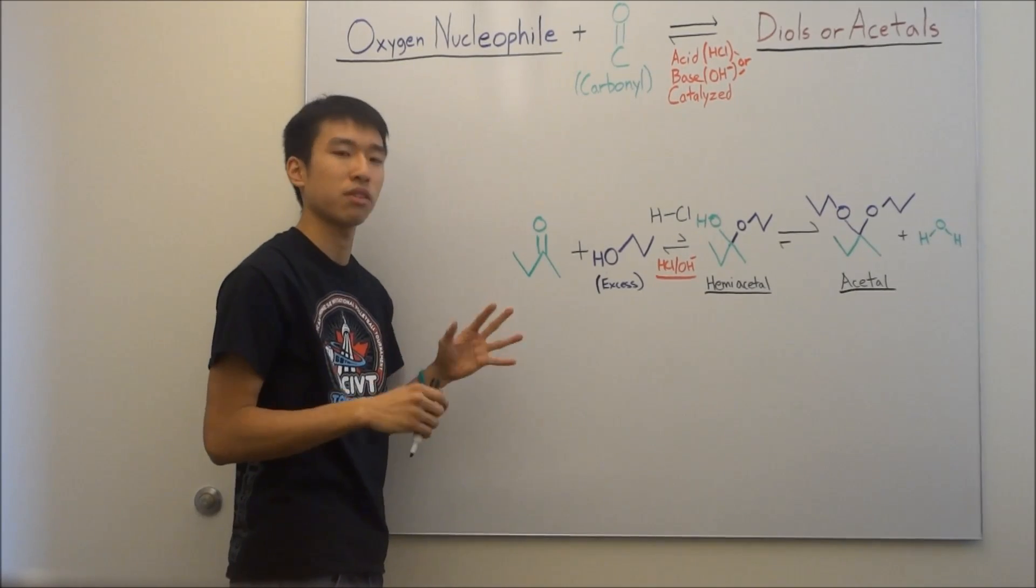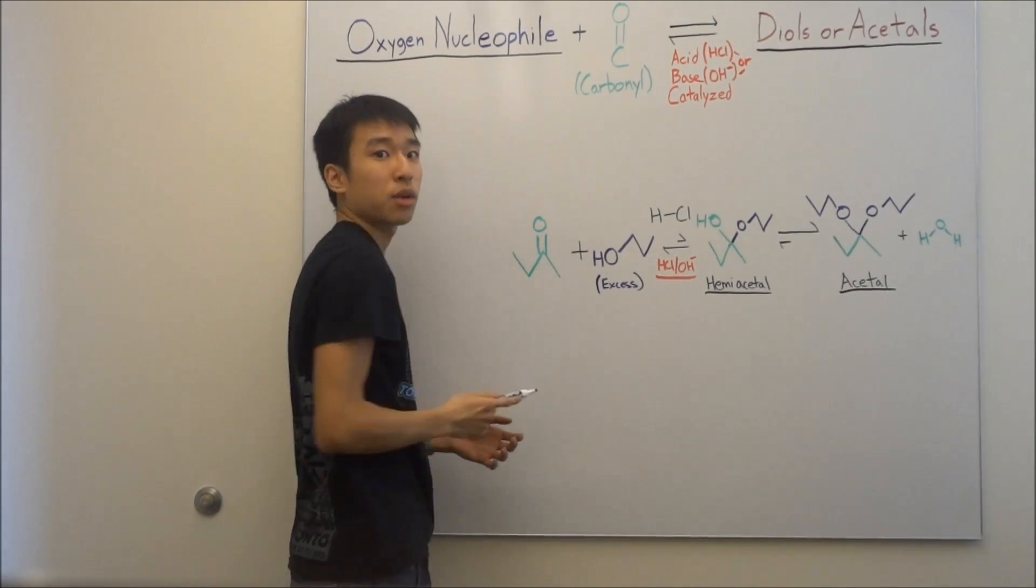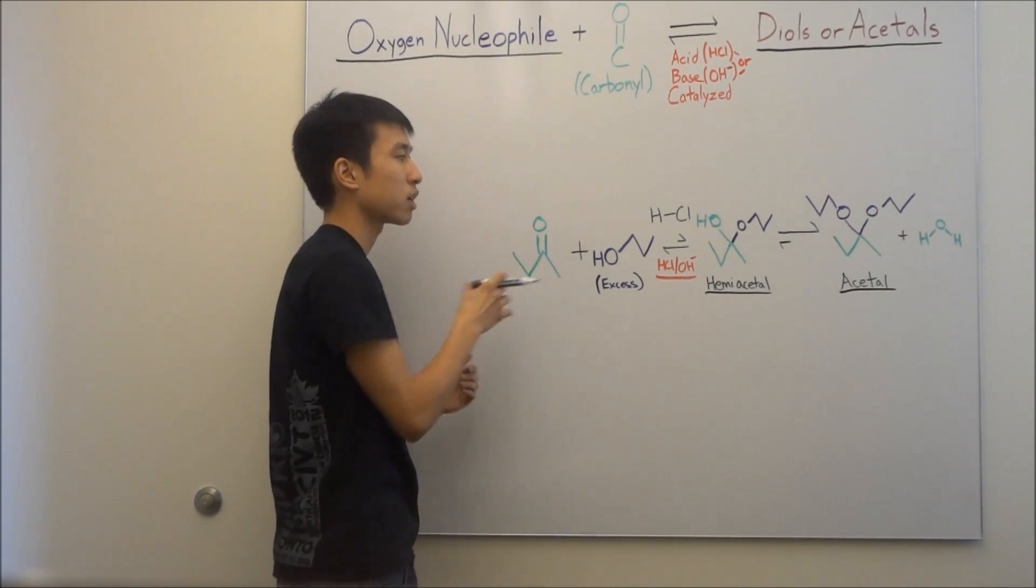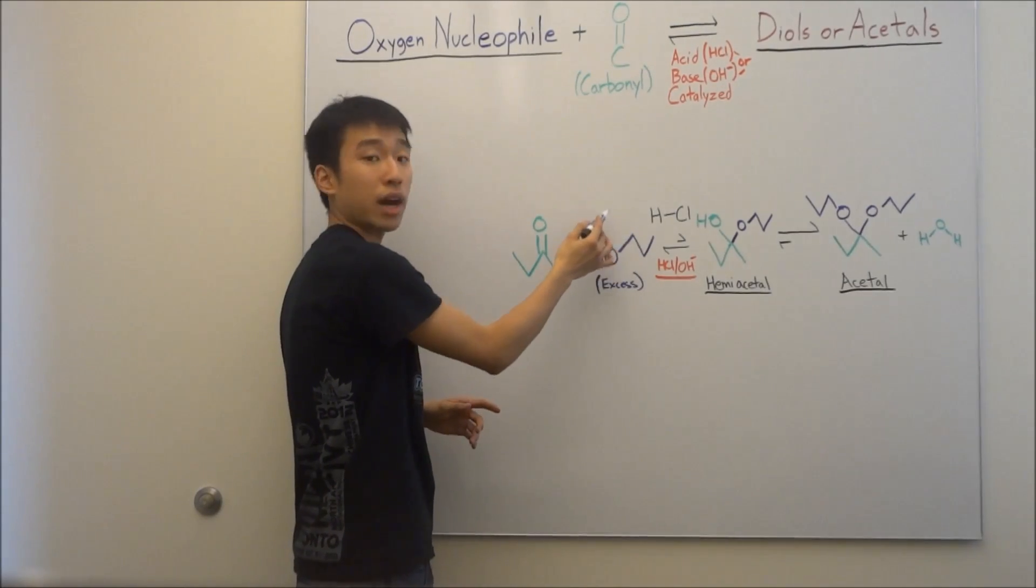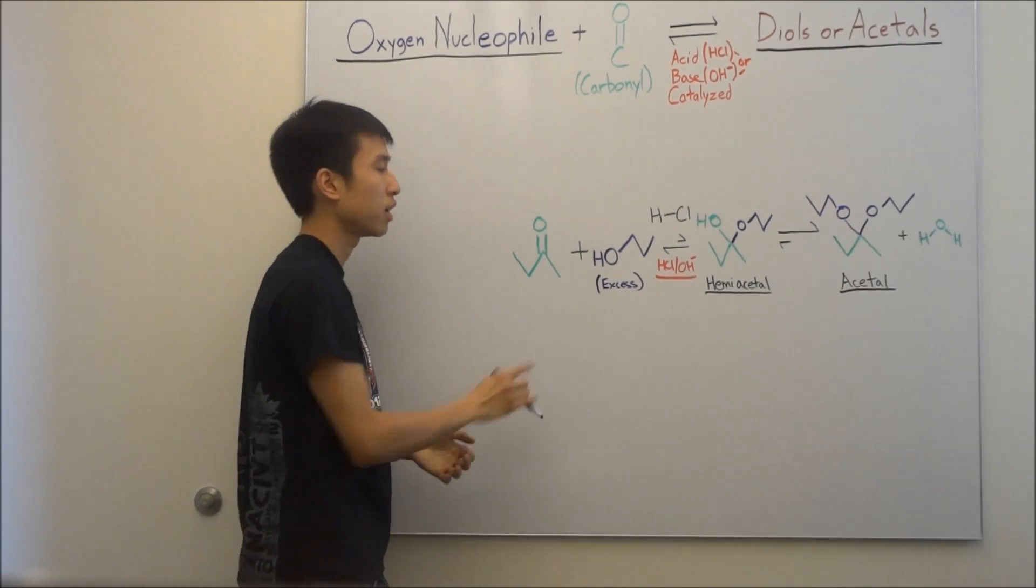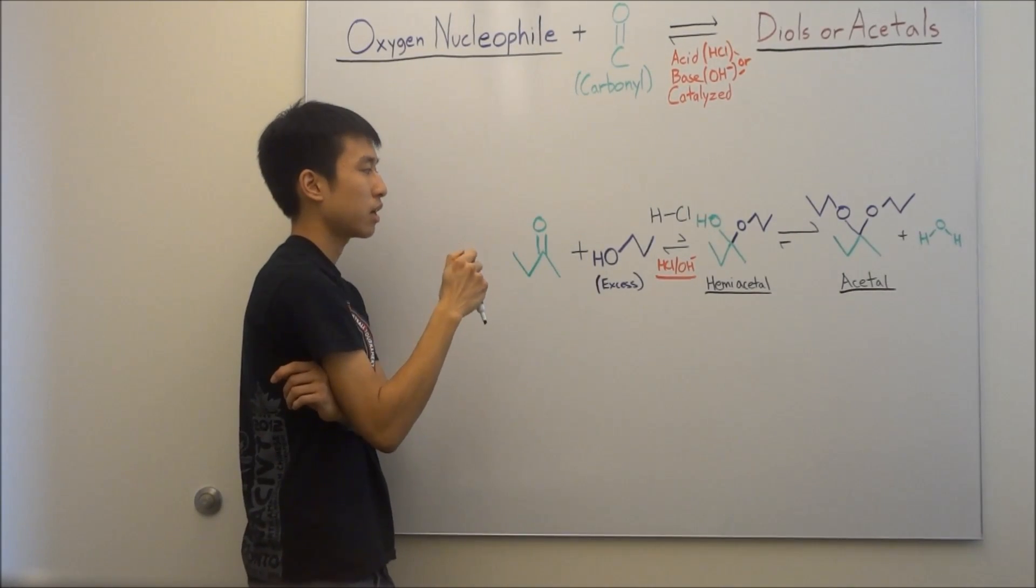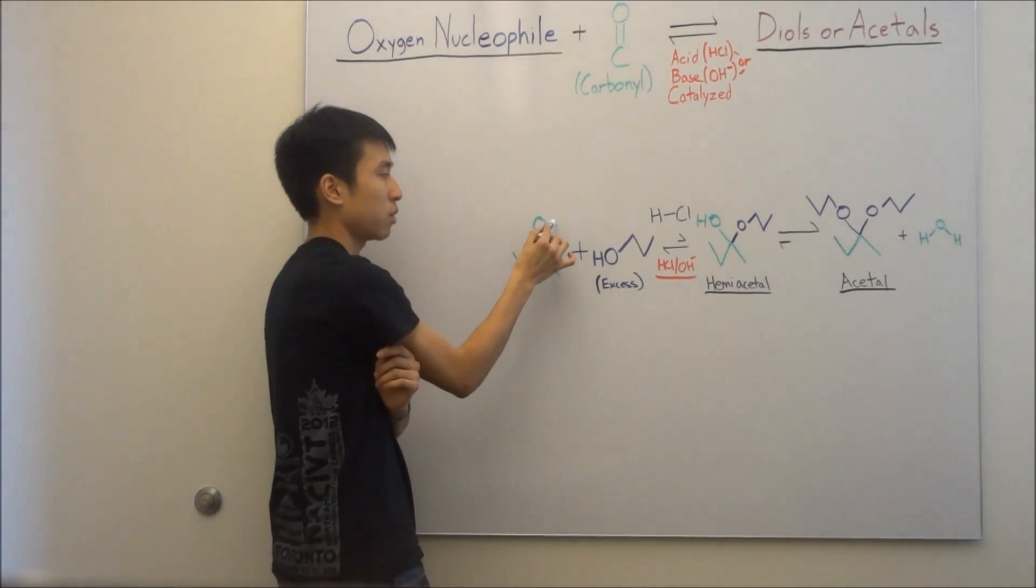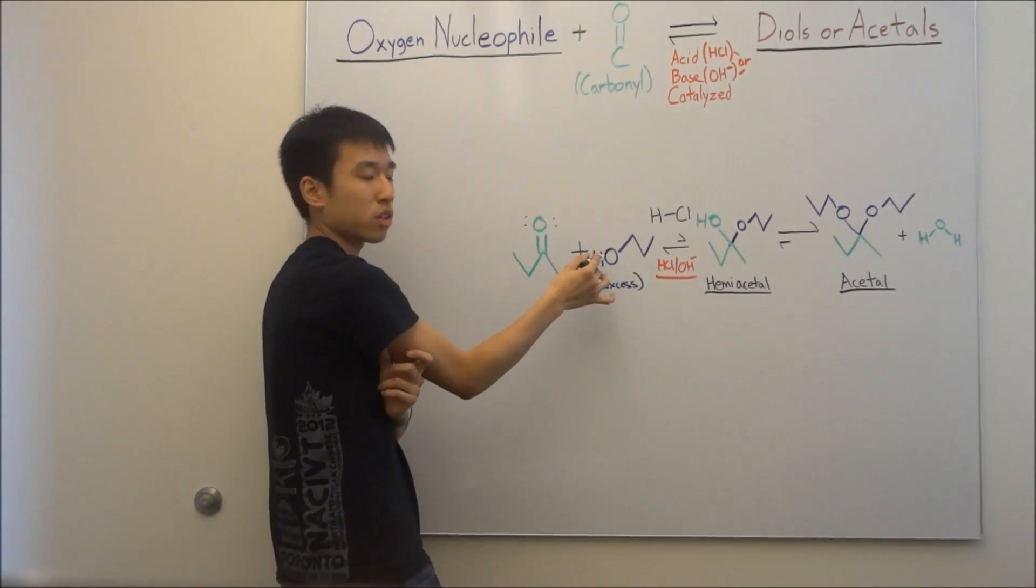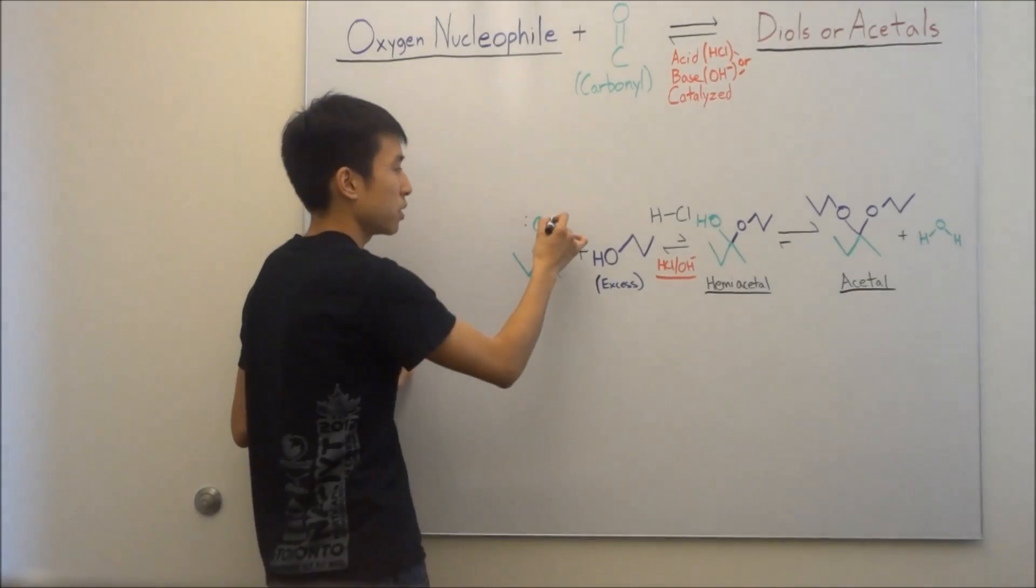Right now you have to ask yourself what's going to be the first step. Because this reaction is acid catalyzed, you probably have to do something with the acid first. You need to ask yourself what in your beaker is going to be protonated or get a hydrogen from this acid. You have two options here: the alcohol oxygen or the oxygen of your carbonyl. The answer is that you're going to actually use this oxygen here who has lone pairs that can pick up that hydrogen.